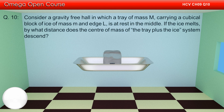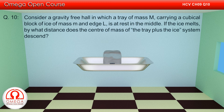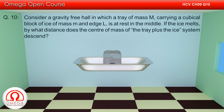Consider a gravity-free hole in which a tray of mass M carrying a cubical block of ice of mass M and edge L is at rest. If the ice melts, by what distance does the center of mass of the tray plus ice system descend?